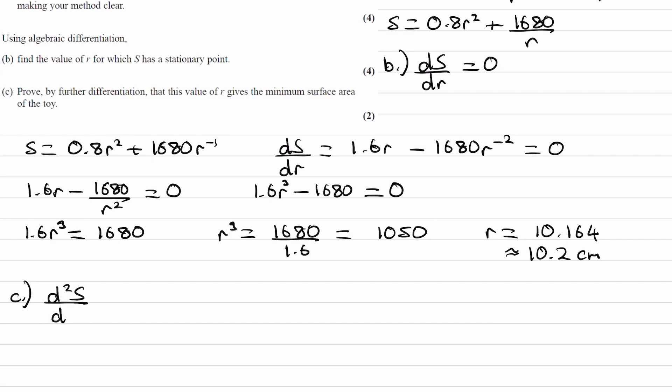So differentiate this expression one more time. We're differentiating this over here. That will then become 1.6 plus 3360r⁻³.